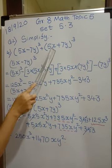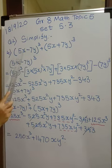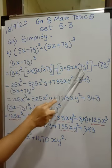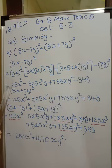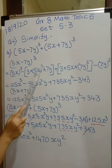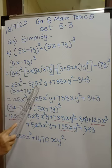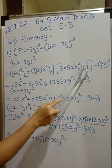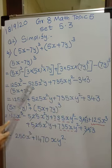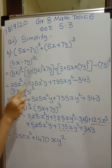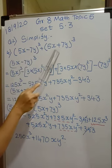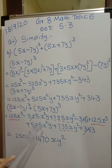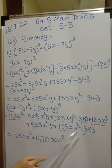Now the fourth problem: (5x - 7y)³ + (5x + 7y)³. This is (a - b)³ + (a + b)³, where a = 5x and b = 7y. Expanding (5x - 7y)³: 5³ = 125x³; 3 × 25 × 7 = 525, so -525x²y; 3 × 5 × 49 = 735, so +735xy²; 7³ = 343, so -343. Since there is a plus sign joining the two expansions, signs do not change for the second bracket.